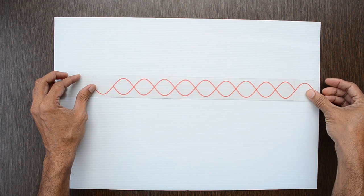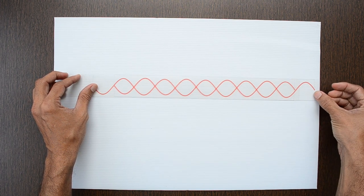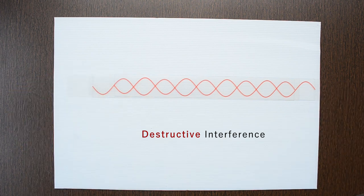When waves are out of phase, the combined effect is zero amplitude. This is destructive interference.